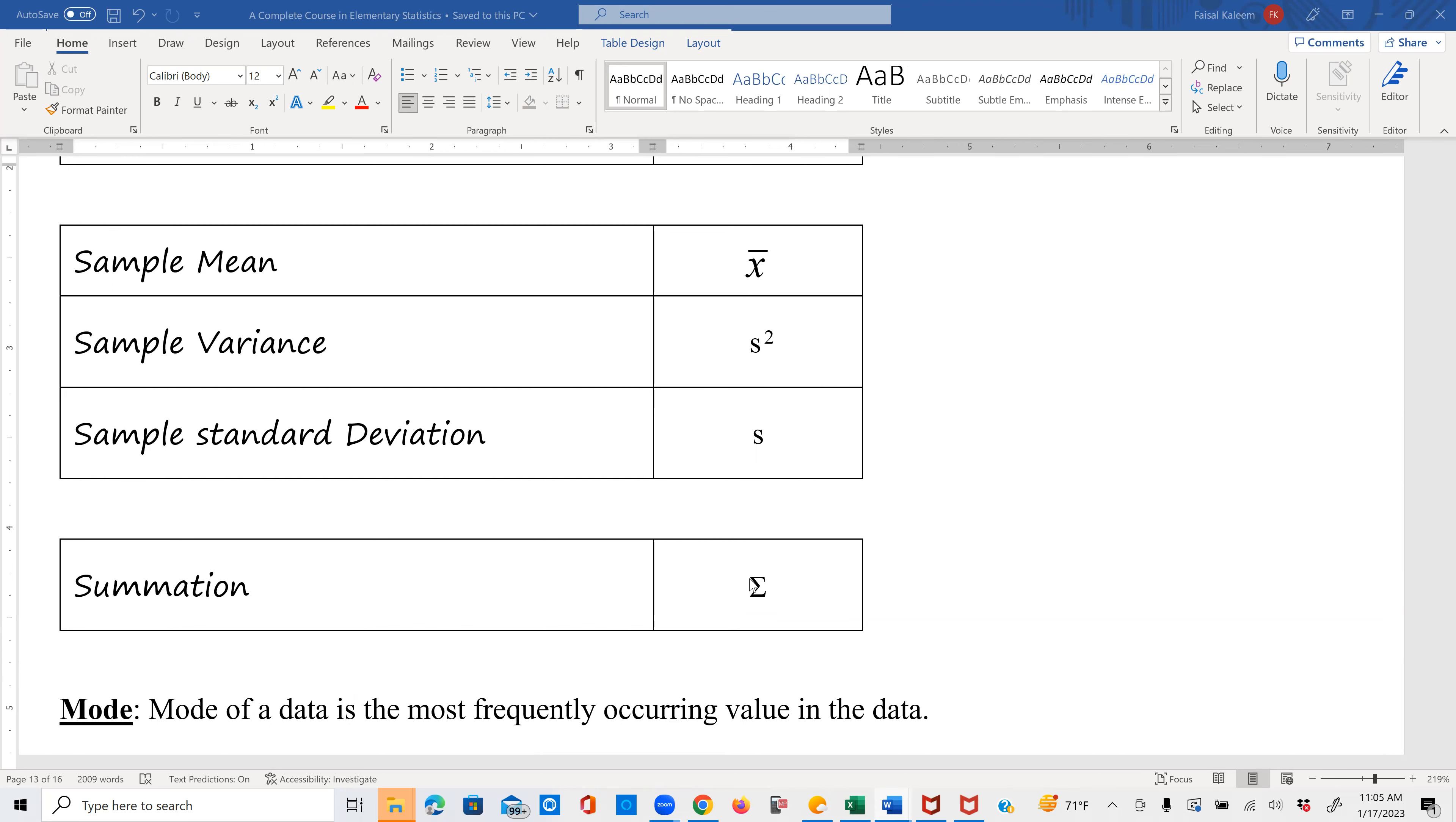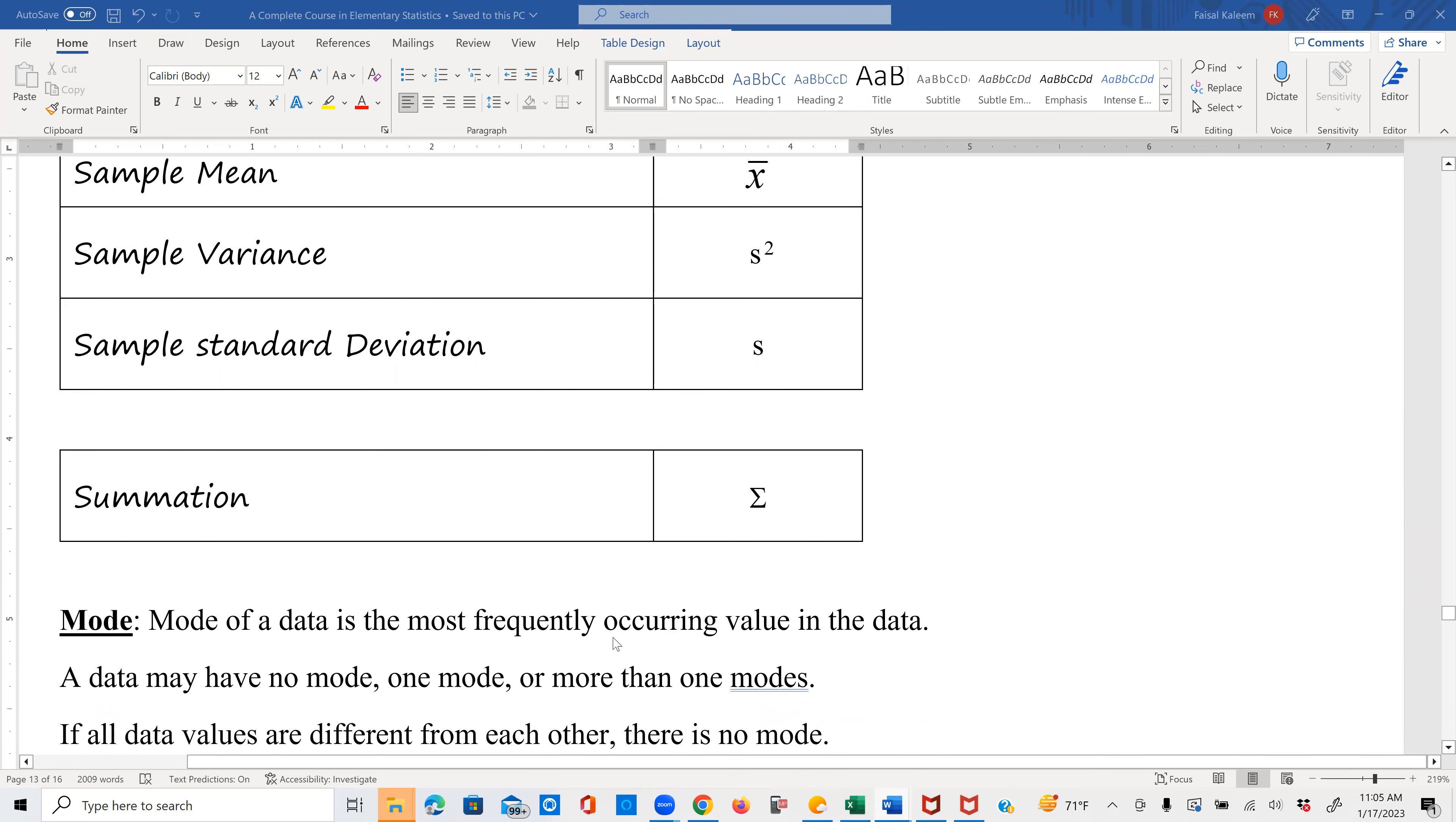Mode. Mode of a data is the most frequently occurring value in the data. A data may have no mode, one mode, or more than one modes. If all data values are different from each other, then there is no mode.